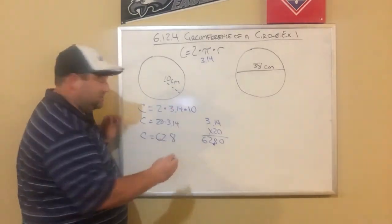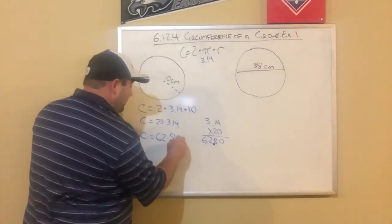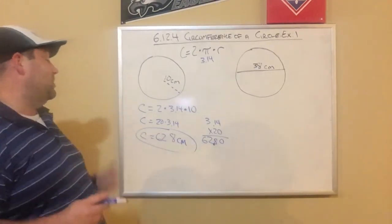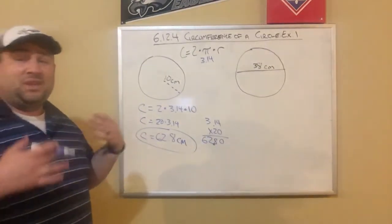And when we label, this is distance. So it's just centimeters. It's like perimeter. We don't do centimeter squared. That's area, which we'll get to tomorrow. It's just perimeter. So our answer is 62.8 centimeters.